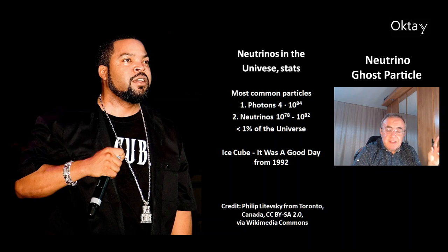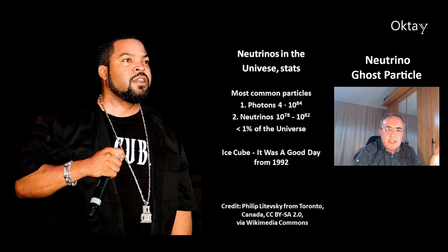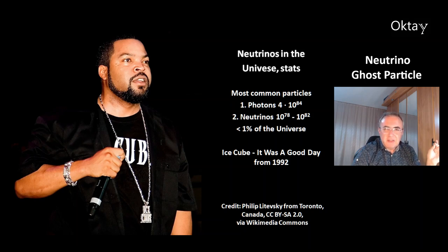These are some interesting statistics about neutrinos in the universe. The most common particle in the universe is the photon — there are 4×10⁸⁴ photons in the universe. Neutrinos are the second most common particle, with an estimated 10⁷⁸ to 10⁸² neutrinos. But still, due to the very low mass of the neutrino, neutrinos can make up no more than 1% of the universe.